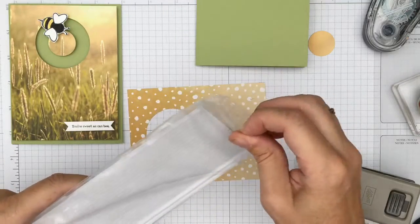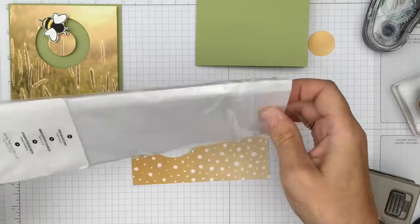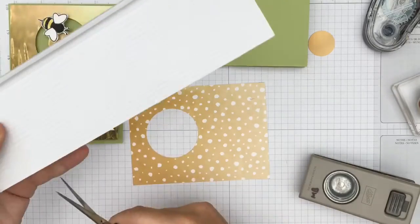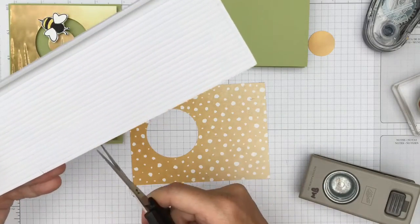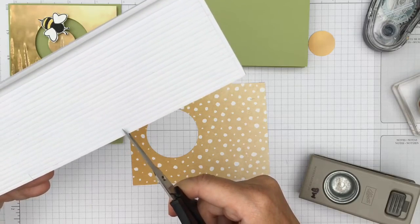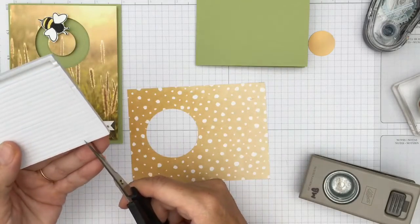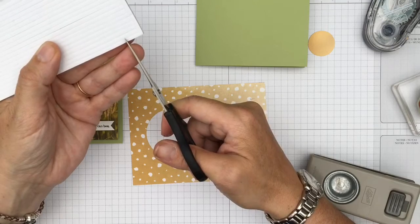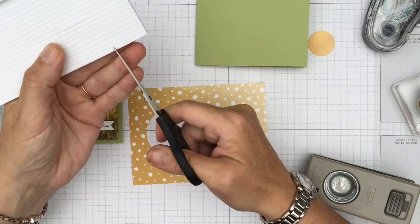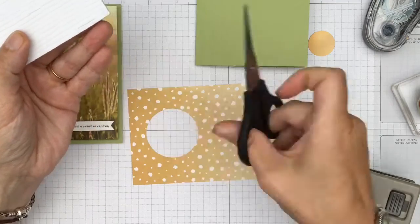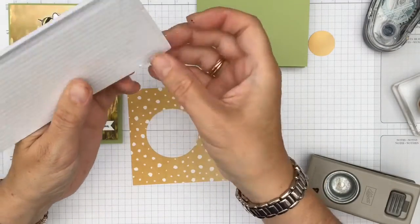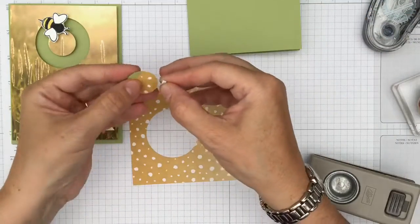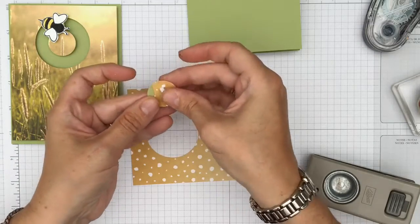Today I am using the Stampin' Up 3D adhesive foam strips. These came out new in this year's catalogue. If you haven't got any, they are really good, so you might want to get some of these. Now what I am doing here is I am just going to snip off just a little tiny bit. I can't use dimensionals because it's not the same depth as these foam strips. So it all needs to be the same depth for it to work.